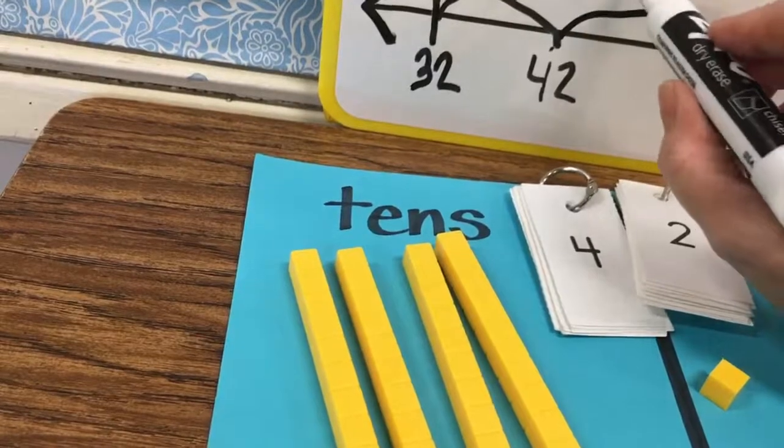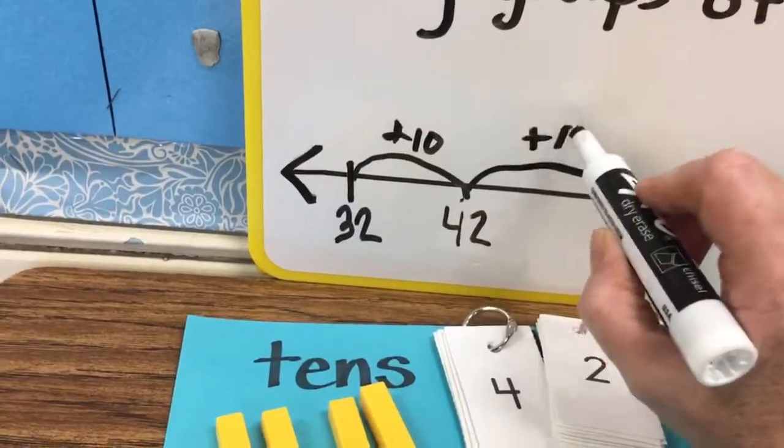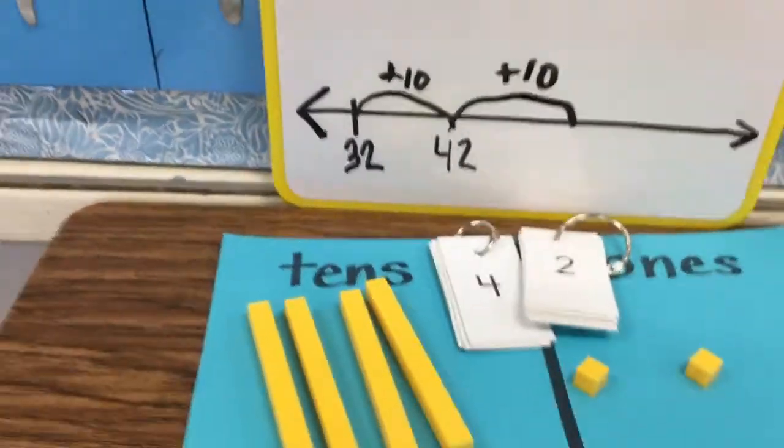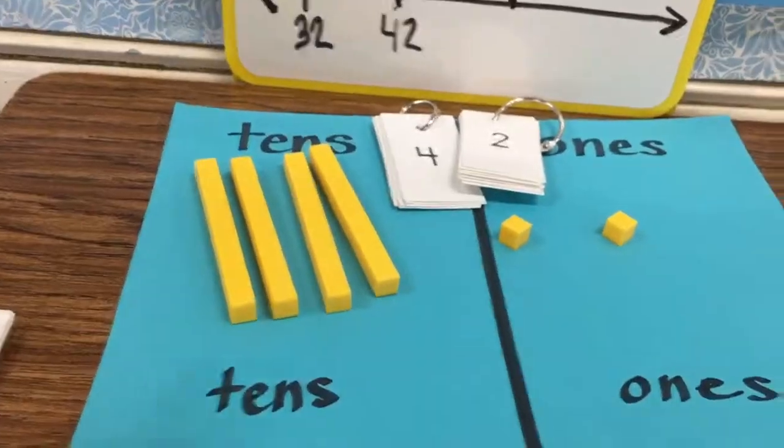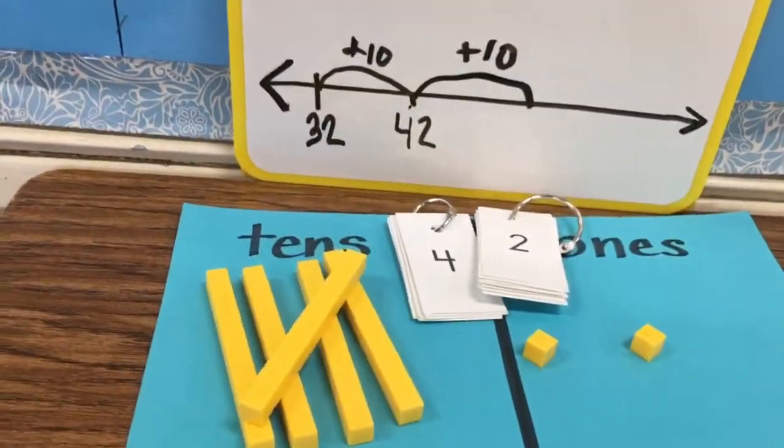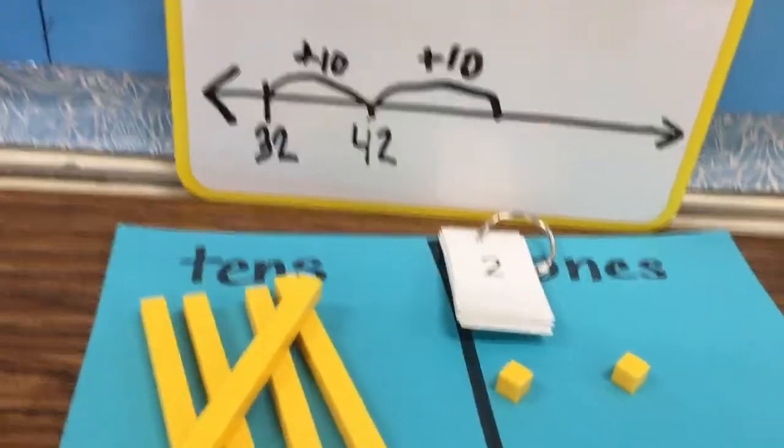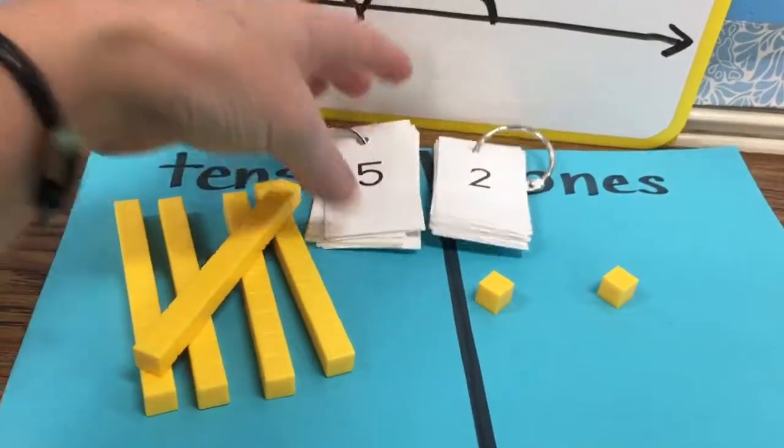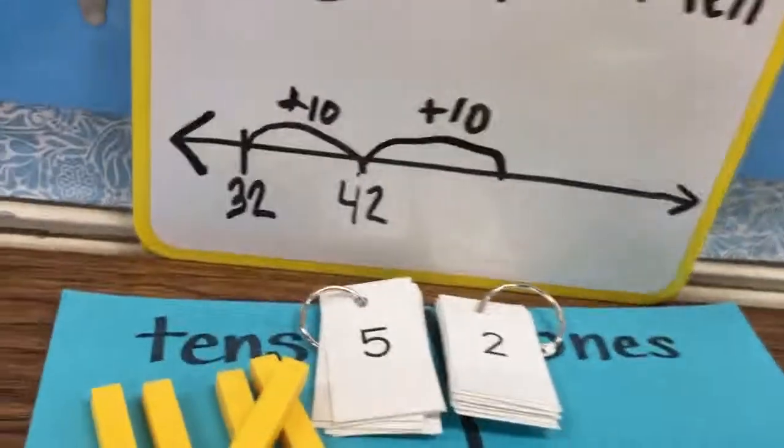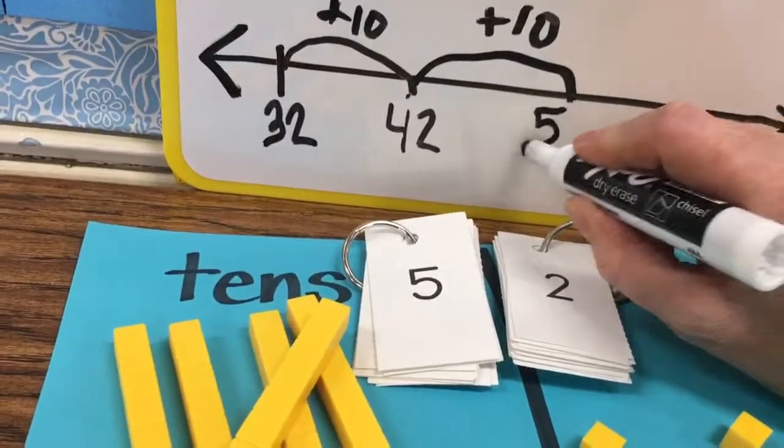Now I would like to jump ahead again and add another group of 10. And I see, of course, that I now have five tens and two ones.